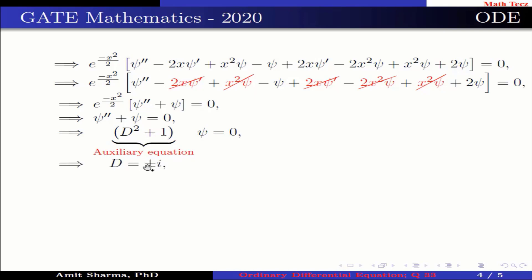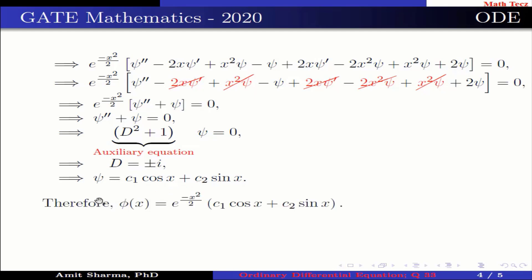The roots of the auxiliary equation are D = ±i, which implies ψ = c₁cos x + c₂sin x, where c₁ and c₂ are arbitrary constants. Therefore φ(x) = e^(−x²/2)·(c₁cos x + c₂sin x).